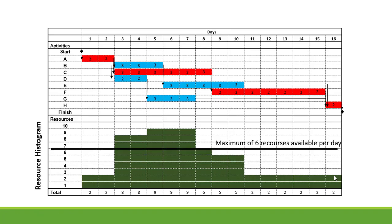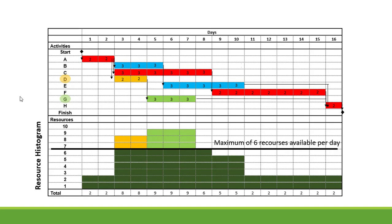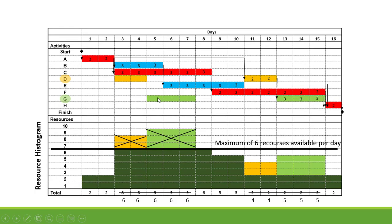We have a constraint that only a maximum of six resources are available per day, so we have over-allocated resources from day three to day seven. We can delay activities to move those resources. Activity D has a float of eight days and G also has float, so we delay D and G — D to end on day 12 and G to end on day 15. This moves resources from days three and four to days 11 and 12, and resources from activity G move from days five, six, and seven to days 13, 14, and 15.